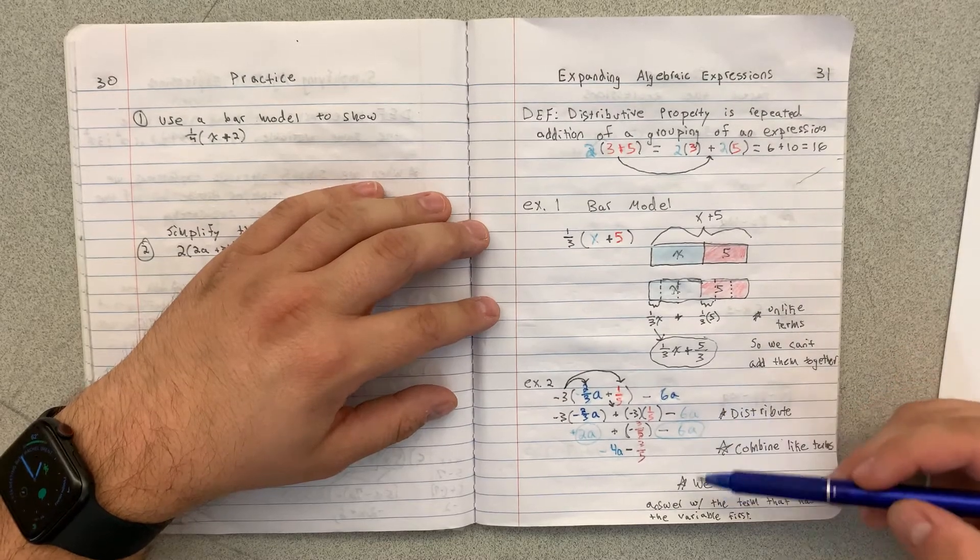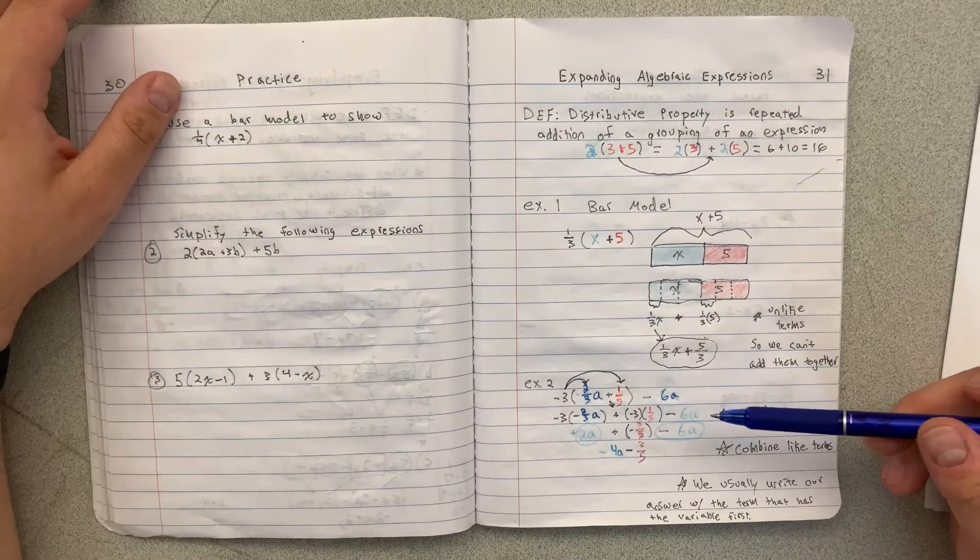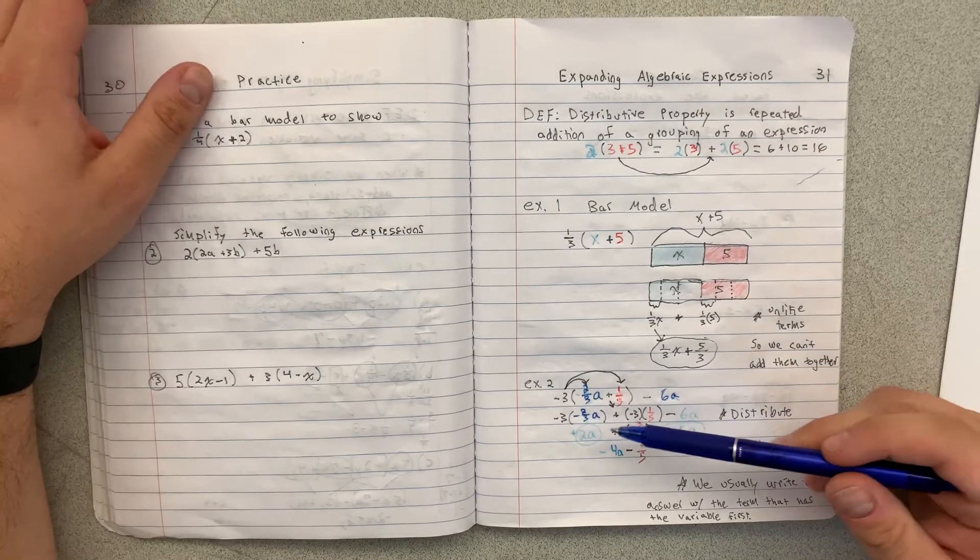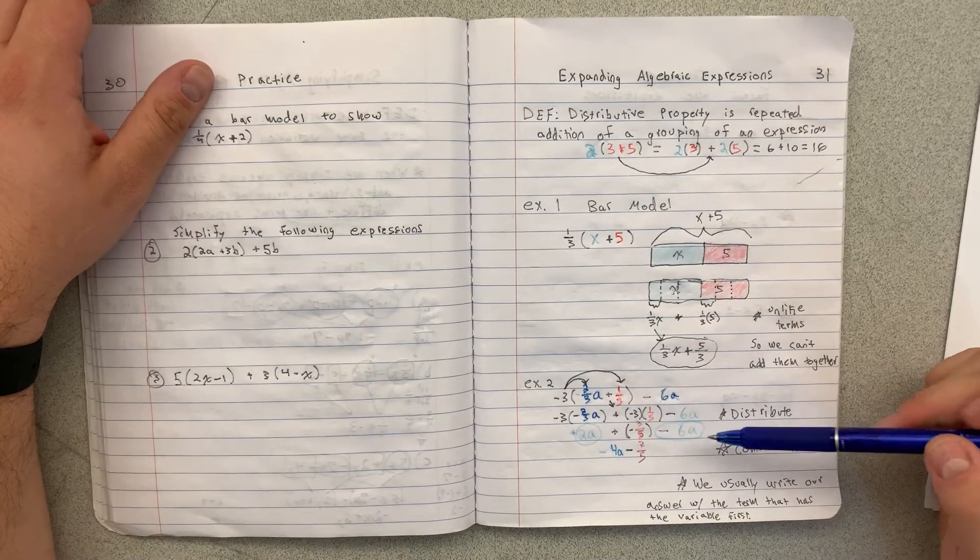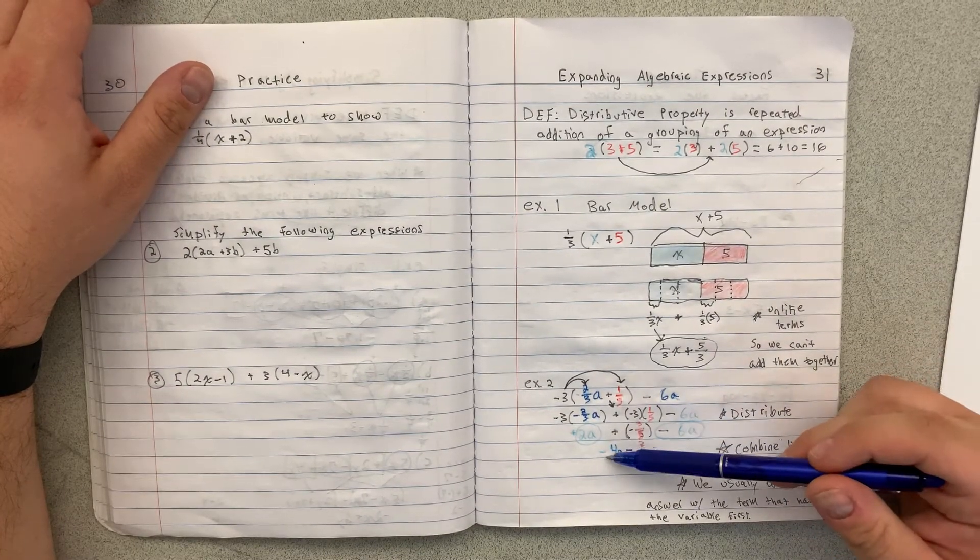So I keep going step by step. I combine any like terms that I have. So like terms here are 2 a, negative 6 a gives me negative 4 a.